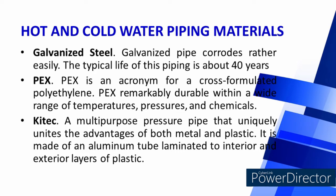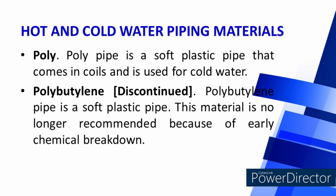Galvanized steel pipe corrodes rather easily, with a typical life of about 40 years. PEX (cross-linked polyethylene) is remarkably durable within a wide range of temperatures, pressures, and chemicals. Kitec is a multipurpose pressure pipe that combines the advantages of both metal and plastic, made of an aluminum tube laminated to interior and exterior layers of plastic. Poly pipe is a soft plastic pipe that comes in coils and is used for cold water. Polybutylene is also a soft plastic pipe, but is no longer recommended because of early chemical breakdown.